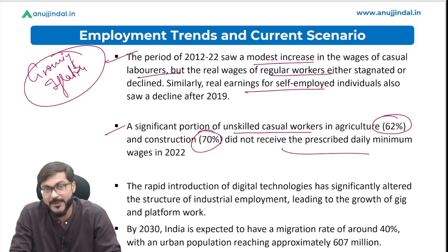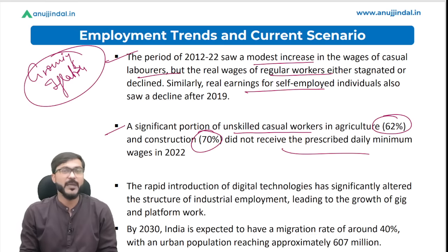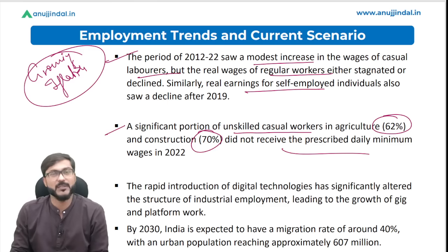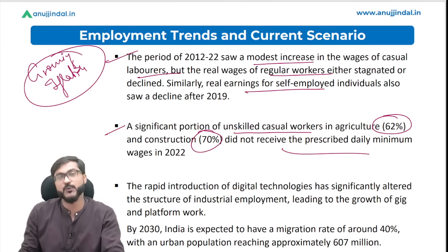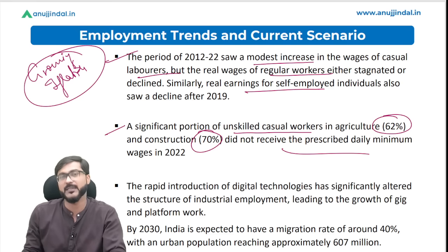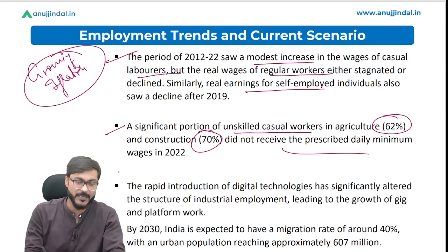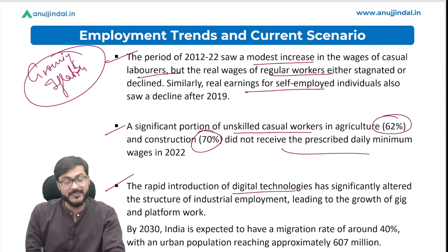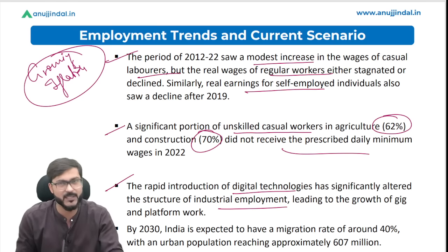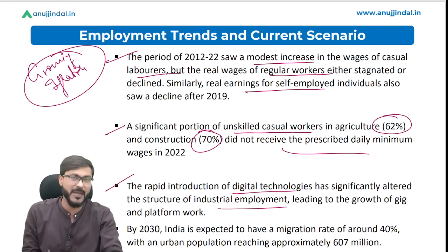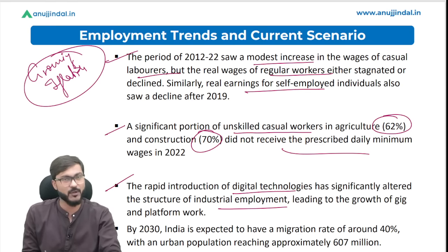Despite the government's talk about minimum wages, 62 percent in agriculture and 70 percent in construction did not receive the prescribed daily minimum wages. The rapid introduction of digital technologies has significantly altered the structure of industrial employment.